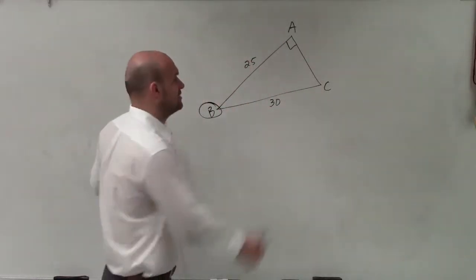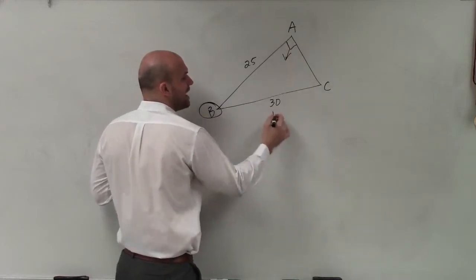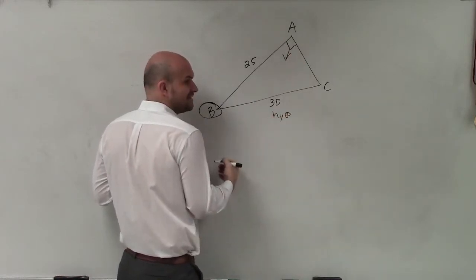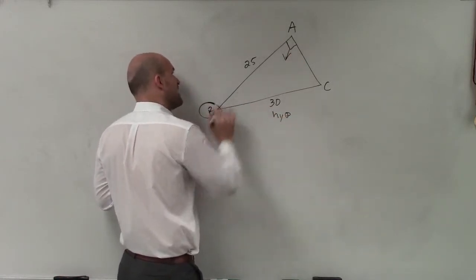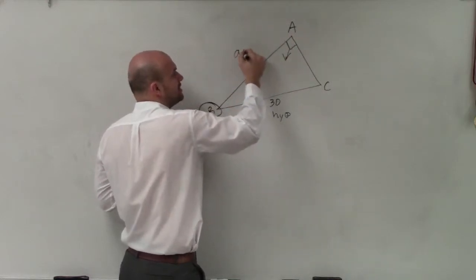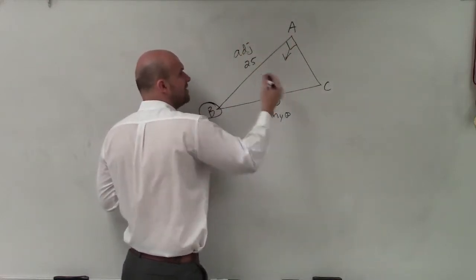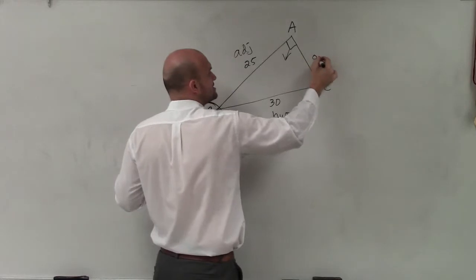So we find our 90-degree angle. First thing, label the hypotenuse. Second thing, label the angle that goes from your angle to the hypotenuse. And we call that side the adjacent side. Therefore, the side that's directly crossed is our opposite.